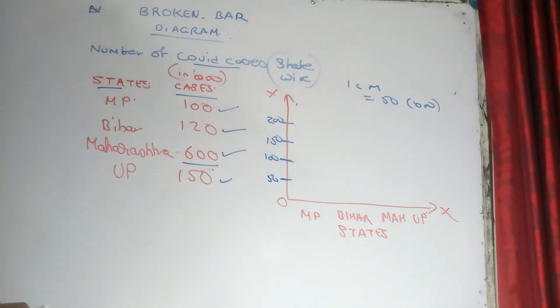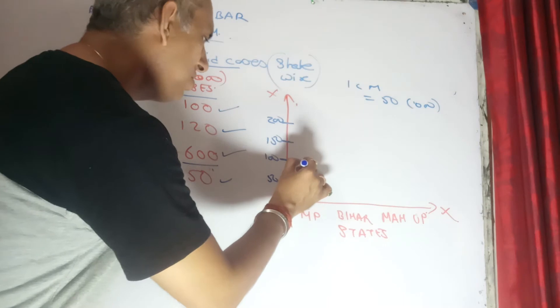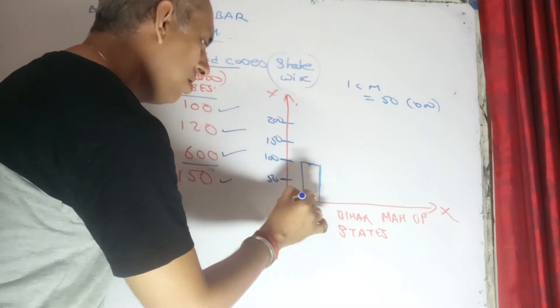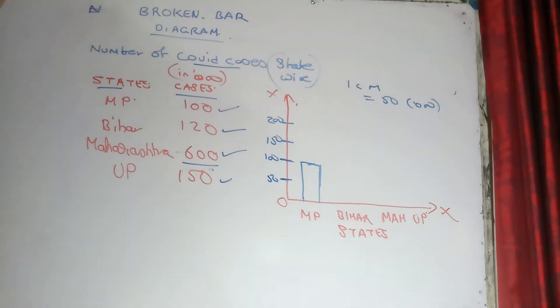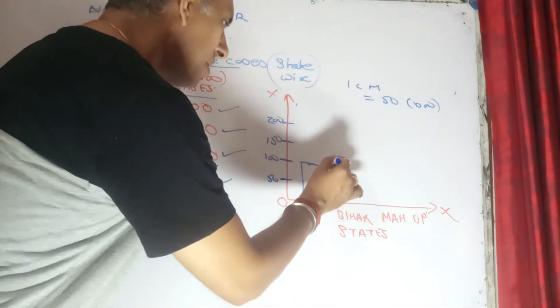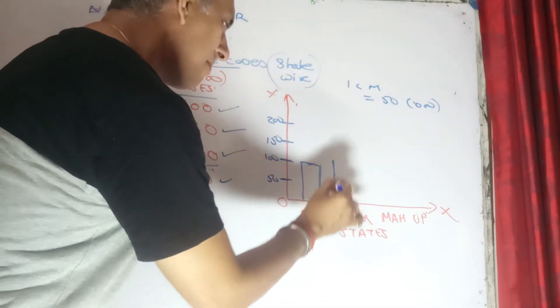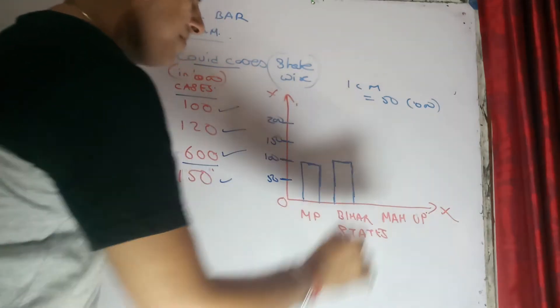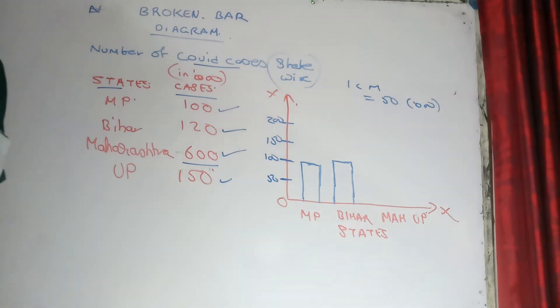So let's pick it up MP. Let's make a rectangle from it. 100 is the size. So the rectangle will be this much tall to start with. Bihar a little bit higher skyscraper. So this much is the height of this building, we can say.